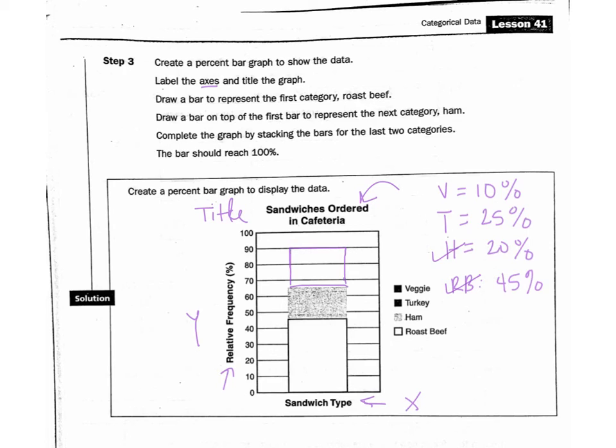I'm going to shade that in a medium shade. Then our last one will be the veggie, which is 10, which makes sense, that's 10 right there, and that one I'll just shade in in blue. So when we're all setting done, this graph should reach 100 percent because it accounts for everything.